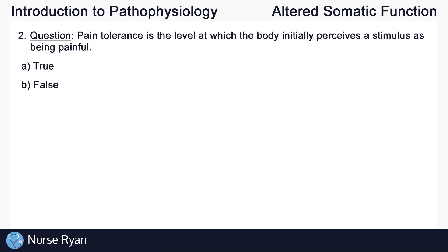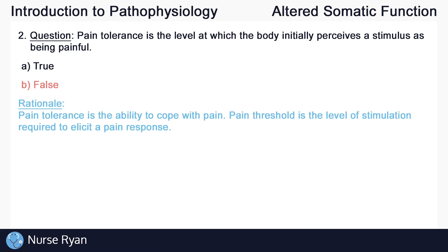Question number two: pain tolerance is the level at which the body initially perceives a stimulus as being painful. This one is B, false. Pain tolerance is the ability to cope with pain, while pain threshold is the level of stimulation required to elicit a pain response. I'll go into a bit more detail about pain tolerance and pain threshold in the next question.